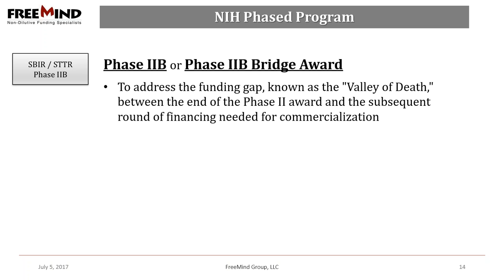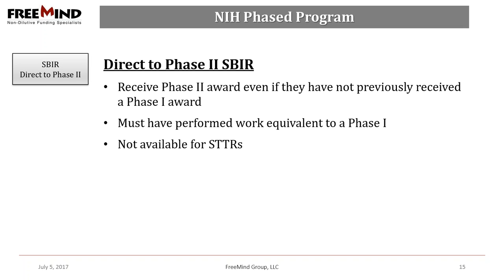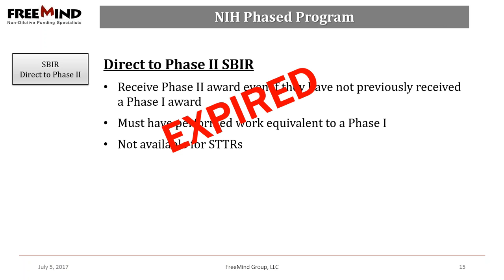There is also a second Phase 2 award, whereby agencies may award a second Phase 2 to continue a Phase 2 project. You may know this as a Phase 2B award, a competing renewal, or a Phase 2B bridge award. The purpose of this award is to support the next step of development for a federally funded SBIR Phase 2 project, to address the funding gap known as the 'valley of death' between the end of the SBIR Phase 2 award and the subsequent round of financing needs for commercialization. Unfortunately, the direct-to-Phase-2 mechanism has expired — this was a pilot program which we expect to be renewed, so stay tuned.